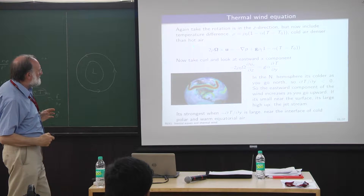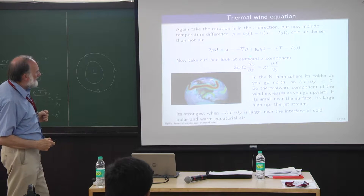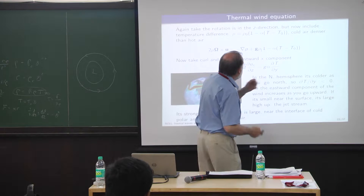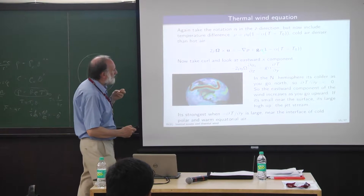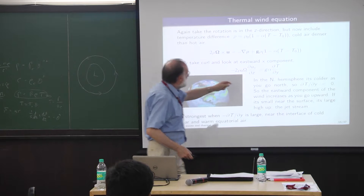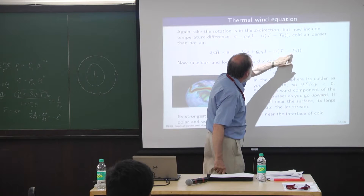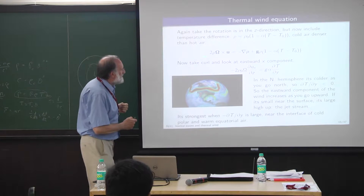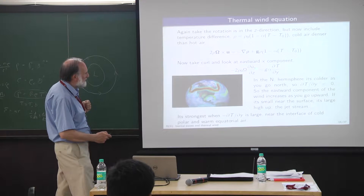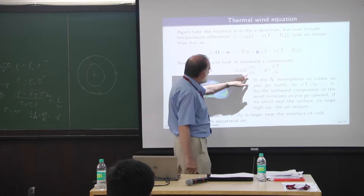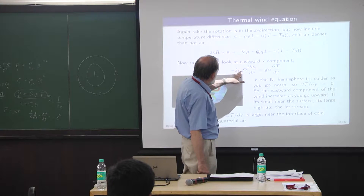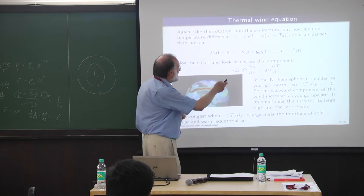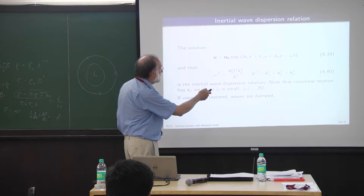Now, forgetting the d/dt term, let's put back in the buoyancy term. That's the Boussinesq buoyancy equation: gravity g, temperature variation modeled by 1 − αT, where α is the coefficient of expansion, giving some buoyancy. We take the curl of the equation again and get an equation where minus 2ρ₀ Ω (du/dz) equals the curl of gαT in that direction.